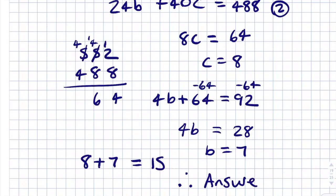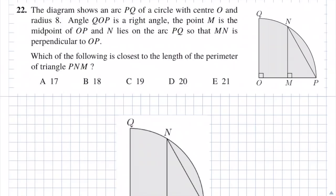Question 22. The diagram shows an arc PQ of a circle with centre O and radius 8. Angle QOP is a right angle. The point M is the midpoint of OP, and N lies on the arc PQ so that MN is perpendicular to OP. Which of the following is closest to the length of the perimeter of triangle PNM? The answers are: A is 17, B is 18, C is 19, D is 20, and E is 21.